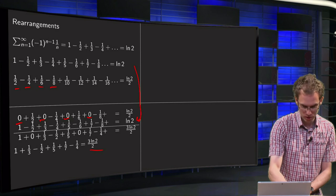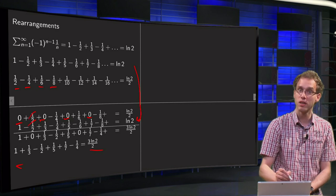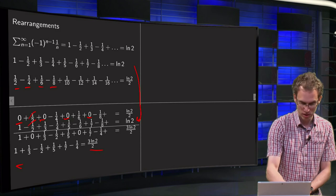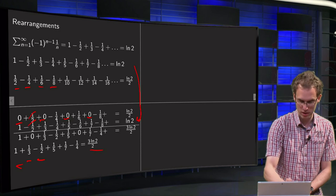And what do we get? 0 + 1 equals 1, then the 1/2 - 1/2 cancel out. 0 + 1/3 equals 1/3. -1/4 - 1/4 equals -1/2.